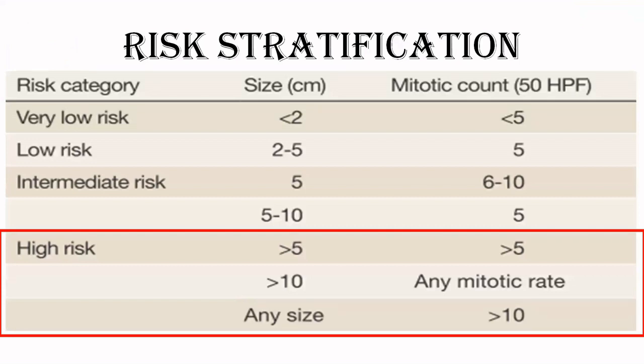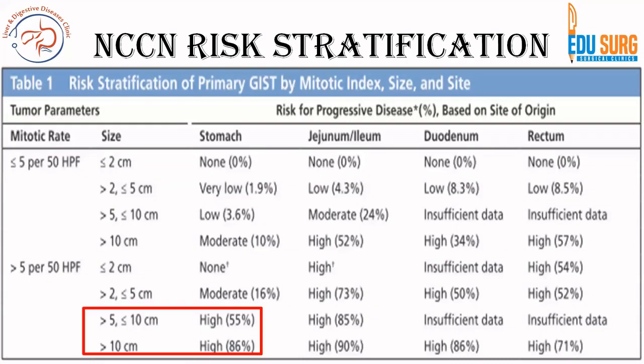A simple concept is 5/5 for stomach and 2/5 for all other GIST. If size is more than 5 cm and mitosis is more than 5, then gastric GIST is high risk. For other GIST, size more than 2 cm with mitosis more than 5 makes them high risk. For isolated points, size more than 10 cm and mitosis more than 10 defines high risk. So remember: 5/5, 2/5, and 10/10.